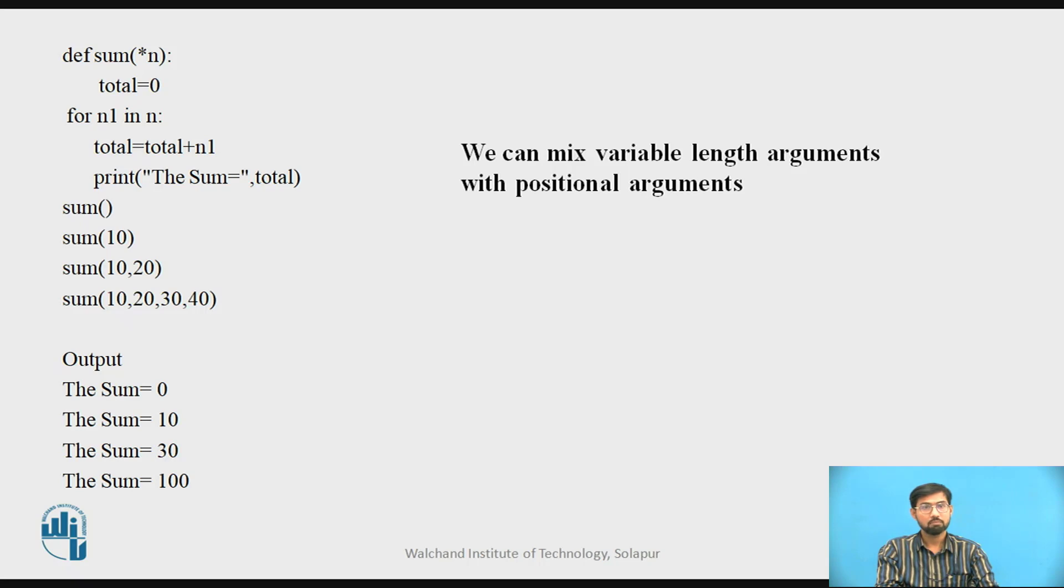Let's understand the example of variable length argument. We define sum star n, total equals zero. Then we use a for loop for different numbers and summation of those numbers. So n1 in n, total and sum equals total, we print sum. Sum(10), sum(10, 20). As like a tuple, we can add 10, 20, 30, 40 in the sum function.